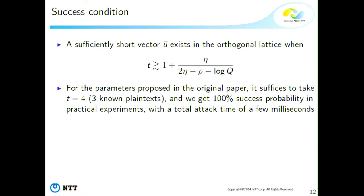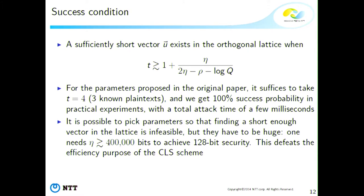For the parameters proposed by CLS — targeting 128-bit security — it always works for t = 4, meaning three known plaintexts suffice to decrypt any ciphertext with 100% probability in a few milliseconds. You can pick primes very large to make finding a short lattice vector infeasible, but for this you need the primes to be at least around 400,000 bits minimum, which completely defeats the efficiency purpose of the scheme.